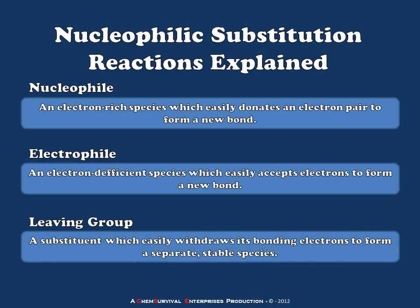And finally, because we're talking about substitution reactions, we have to have a leaving group as well. If we add the nucleophile, we have to lose the leaving group — otherwise it's not technically defined as a substitution reaction. A leaving group would be any substituent on a molecule which easily is removed by the withdrawal of its bonding electrons to form a separate stable species. Leaving groups are characterized by any group which will tolerate the acceptance of these electrons and the formation of a negative charge within that group as it departs from the rest of the molecule.